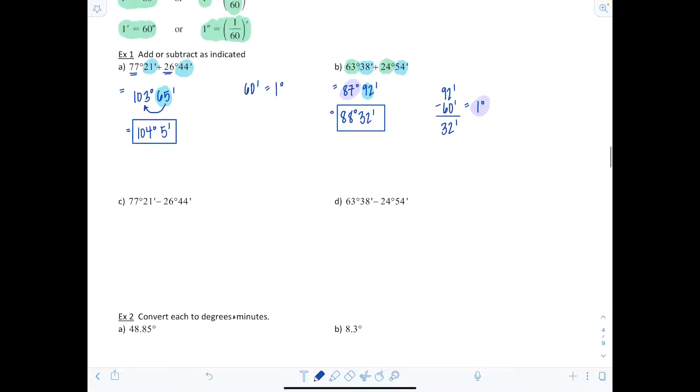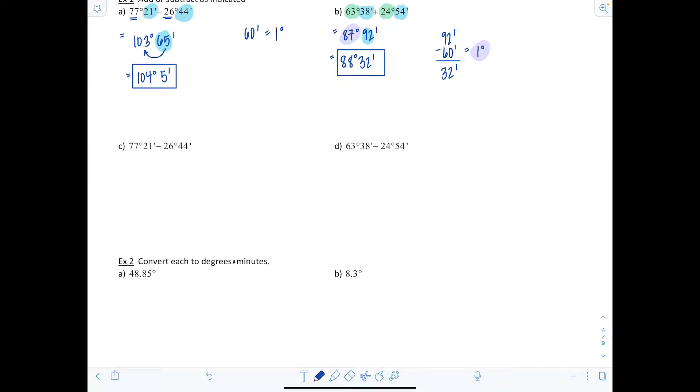Now it can be a little trickier with subtraction. Here we have 77 degrees and 21 minutes minus 26 degrees and 44 minutes. I noticed right off the bat I'm gonna need to do some borrowing because I can't take 44 minutes from 21 minutes. So I borrow from the 77 degrees and now make it 76 degrees.